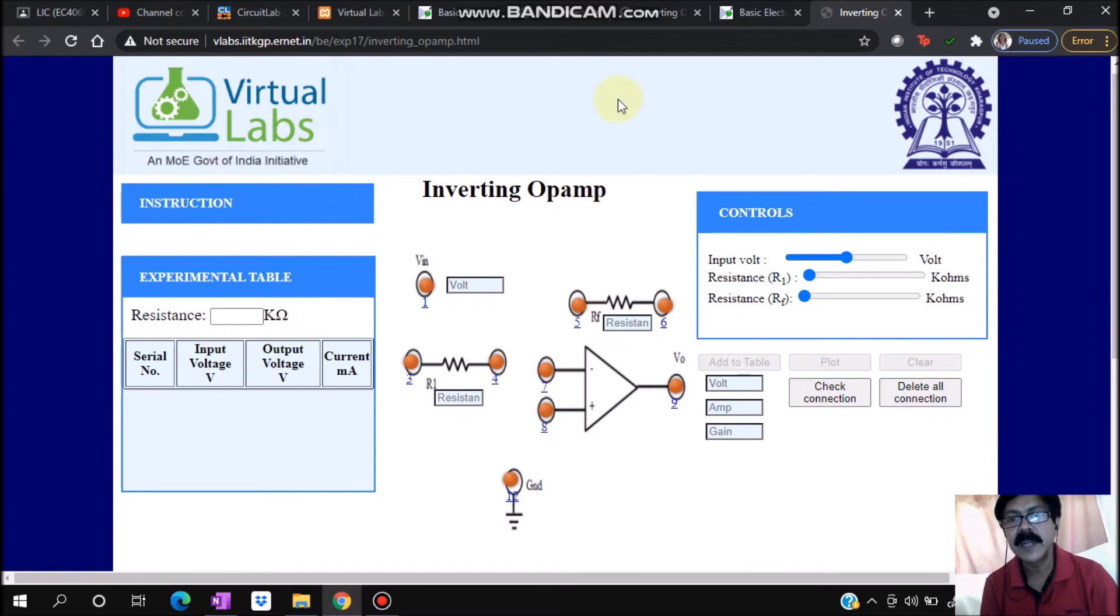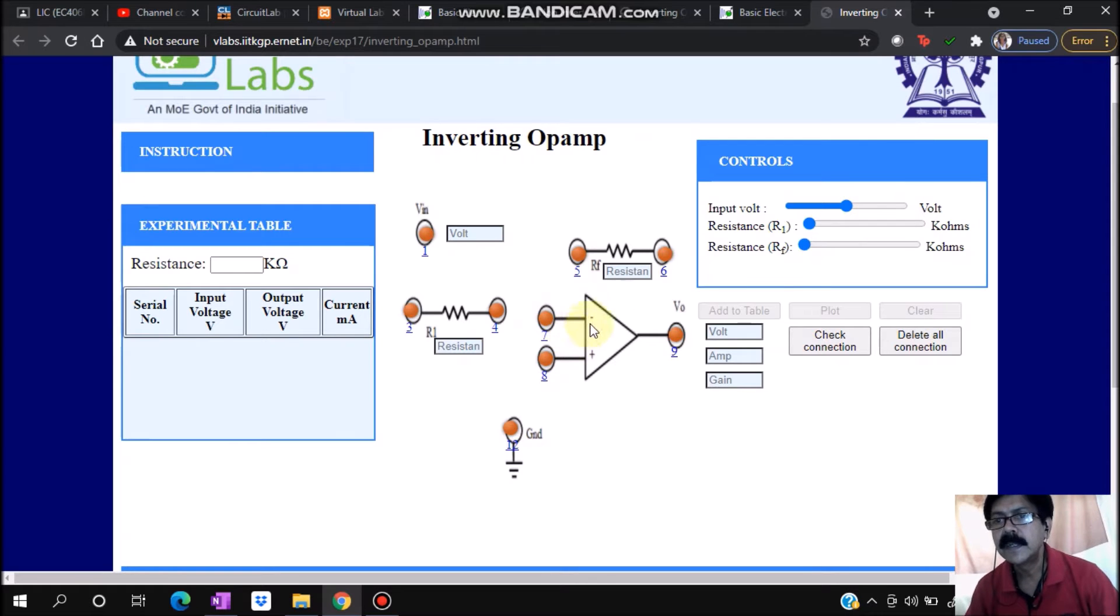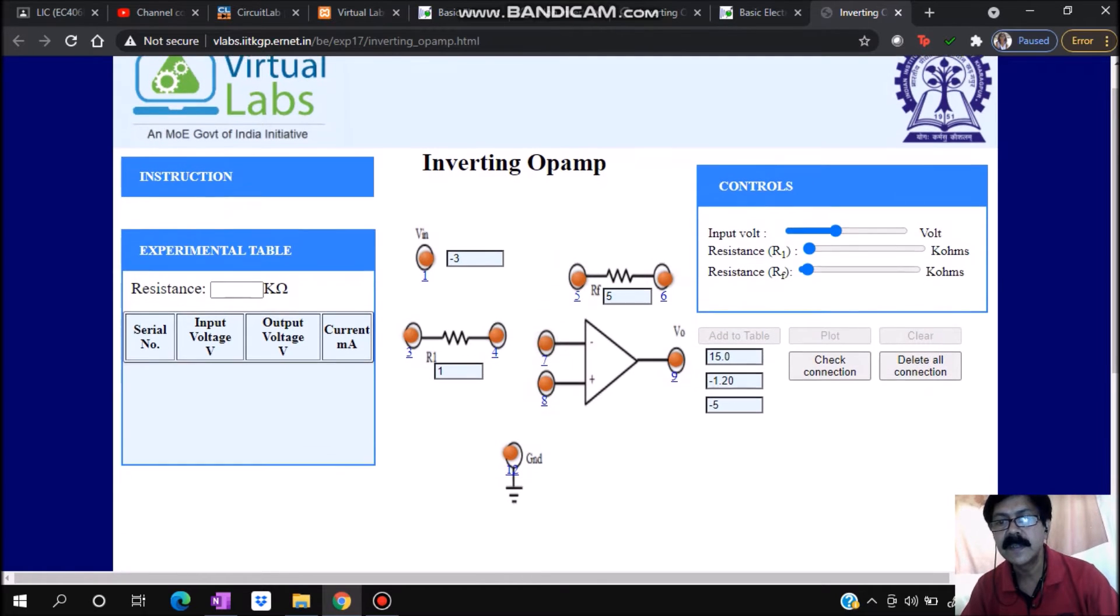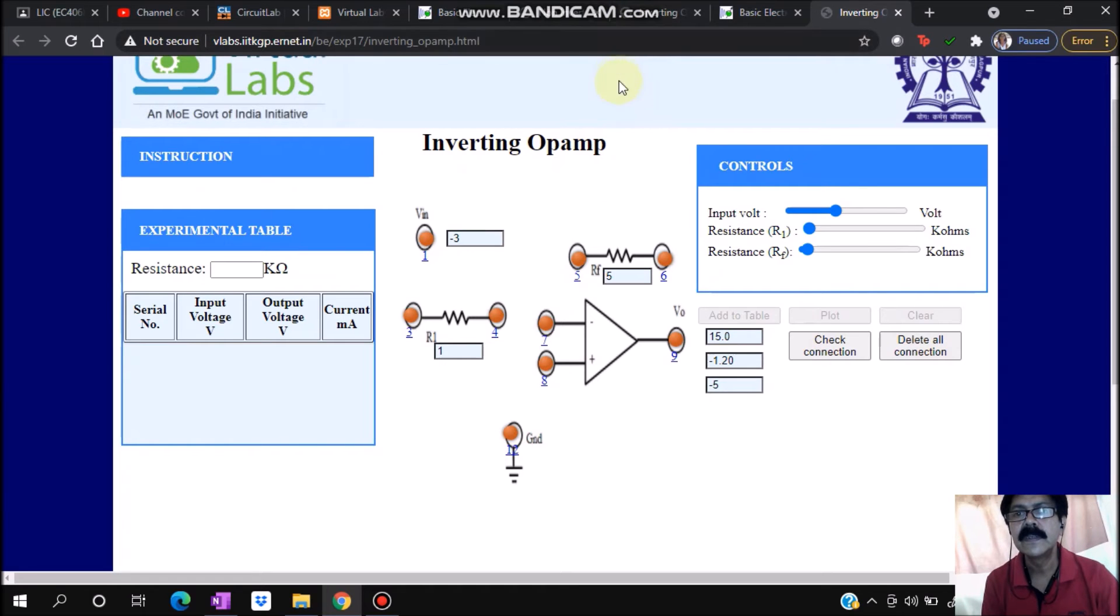Here we'll try to connect this. First, we'll select resistance values. Let's say R1, I'm selecting as 1 kilohm. You can see the change here, it is 1 kilohm. And resistor Rf, I'll choose, let's say 5. So theoretically, the gain will be minus Rf upon R1, which is minus 5. Now I will have a different range of input voltages. Now I need to connect this.